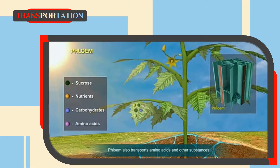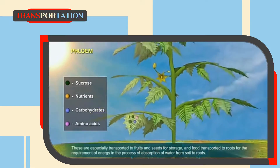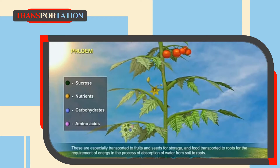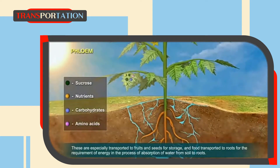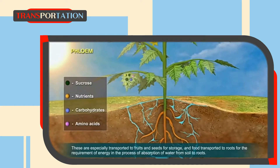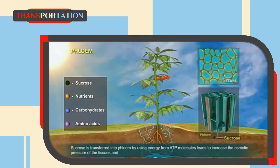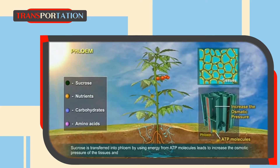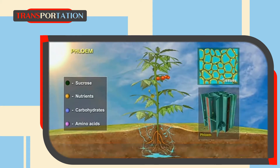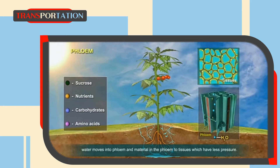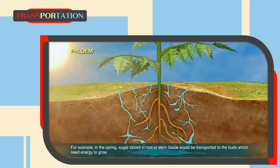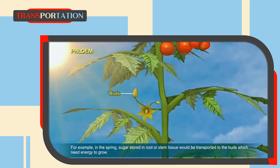Phloem also transports amino acids and other substances. These are specially transported to fruits and seeds for storage, and food is transported to roots for the energy required in the process of absorption of water from soil. Sucrose is transferred into phloem using energy from ATP molecules, which increases the osmotic pressure of the tissue and causes water to move into the phloem, transporting materials to tissues with less pressure. For example, in spring, sugar stored in root or stem tissue is transported to the buds which need energy to grow.